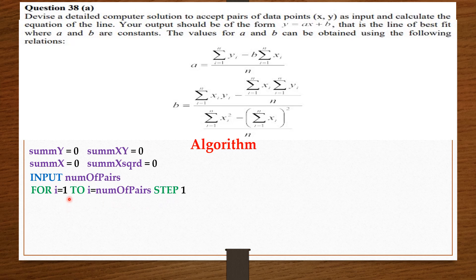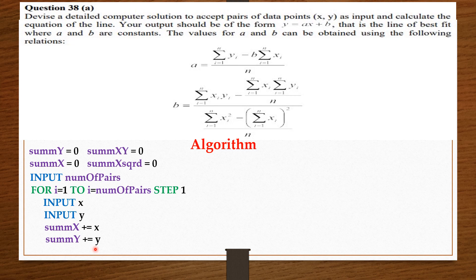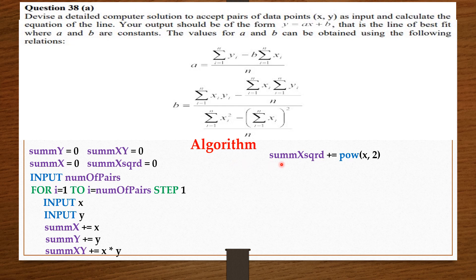Inside the loop, we ask the user to enter the x data point — input x. Again, we ask the user to enter the y data point — input y. Whatever value the user entered for x, add it to summation of x: summation of x plus equals x. Whatever value the user entered for y, add it to summation of y: summation of y plus equals y. Also, multiply x and y and add their value to summation of xy: summation of xy plus equals x times y. And lastly, raise x to the power of 2 and add it to summation of x squared: summation of x squared plus equals x to the power of 2.